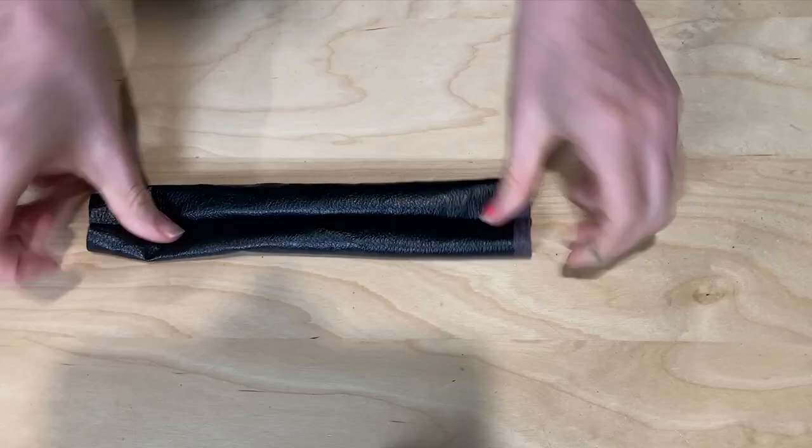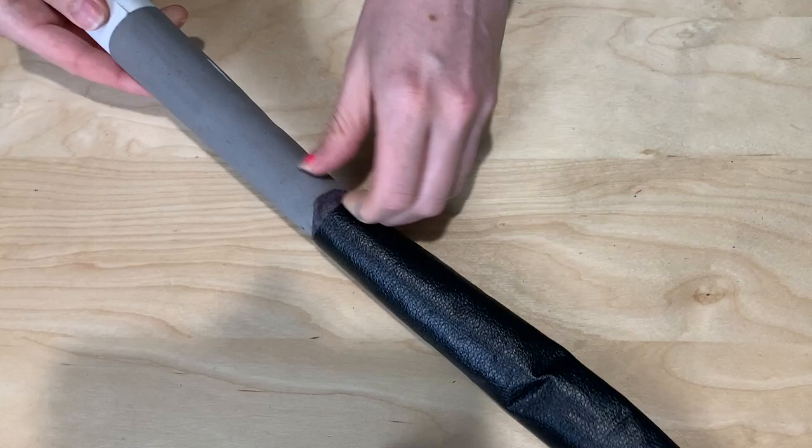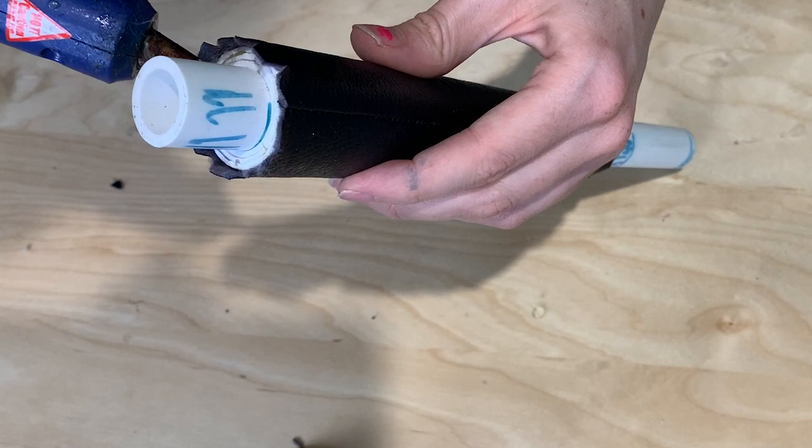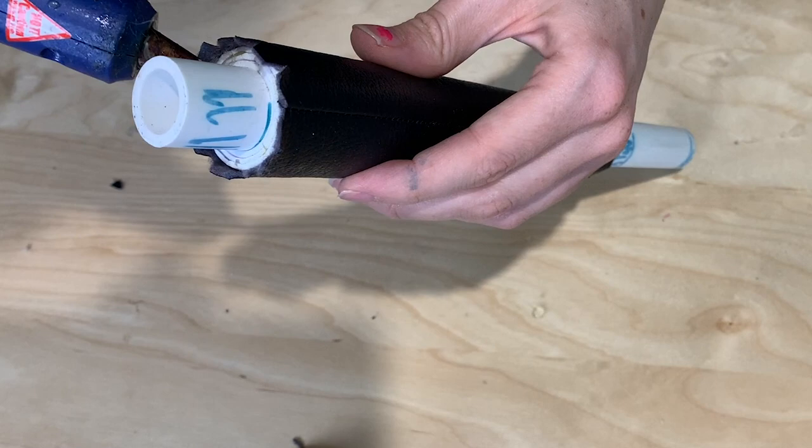I then covered the foam section in pleather by creating a tube that was the same size as the tapered section, flipping it inside out, and slipping it over that section. I secured it in place by trimming down the edges, tucking them in, and hot gluing them into place.